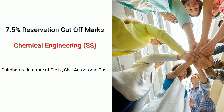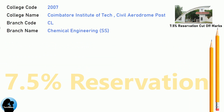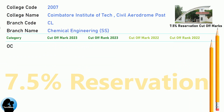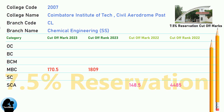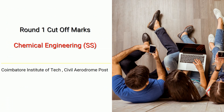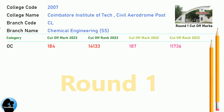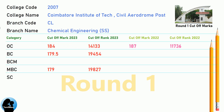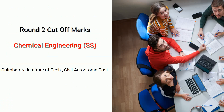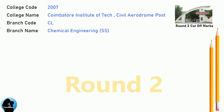DNEA 7.5 Reservation Cut-Off for Coimbatore Institute of Technology in Chemical Engineering, SS. DNEA Round 1 Cut-Off for Coimbatore Institute of Technology in Chemical Engineering, SS. DNEA Round 2 Cut-Off for Coimbatore Institute of Technology in Chemical Engineering, SS.